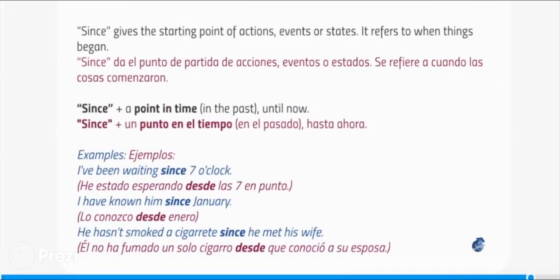Since gives the starting point of actions, events or states. It refers to when things began: since plus a point in time in the past until now. Examples: I've been waiting since seven o'clock. I have known him since January. He hasn't smoked a cigarette since he met his wife.